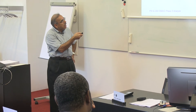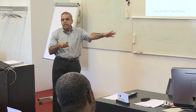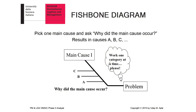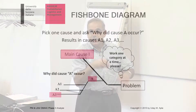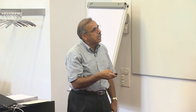Then you ask why main cause 1 is happening and come up with an answer, digging deeper into the causes. After finding main cause 1, you ask why it came up and may arrive at reasons A, B, C. Then for cause A, you ask why it occurred — maybe because of A1, A2, A3 — and you keep digging deeper into this technique.